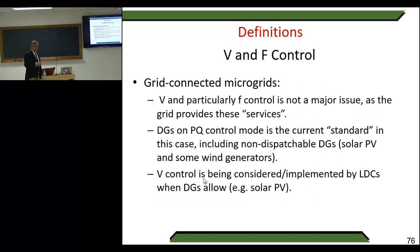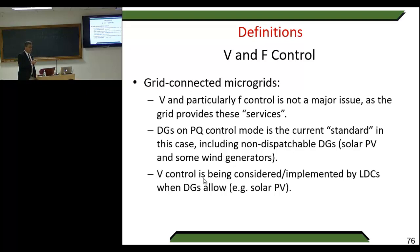We have grid-connected microgrids, which is one world, and islanding or off-grid operation of microgrids, which is normally for us the worst case. When analyzing a grid-connected microgrid in islanding mode, you need to be very careful — all what you learn from isolated microgrids is valid for connected microgrids when they operate in islanding mode. In grid-connected microgrids, voltage and particularly frequency control is not a major issue; they are provided mainly by the grid services.